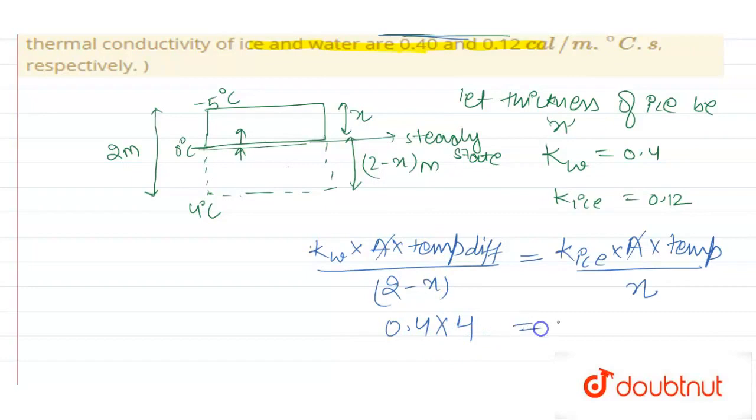This equals k of ice which is given as 0.12. So we'll put 0.12 times 4 divided by 2 minus x.